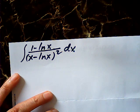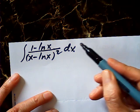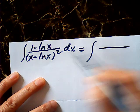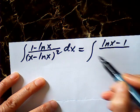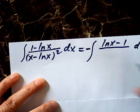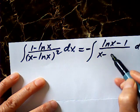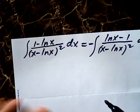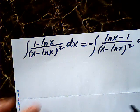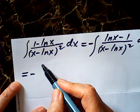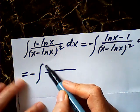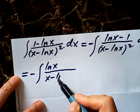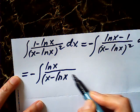The first step is this. Let me rewrite the numerator as log x minus 1. So here we have a negative outside and x minus log x square. Then I write this way: log x. This is x minus log x square.